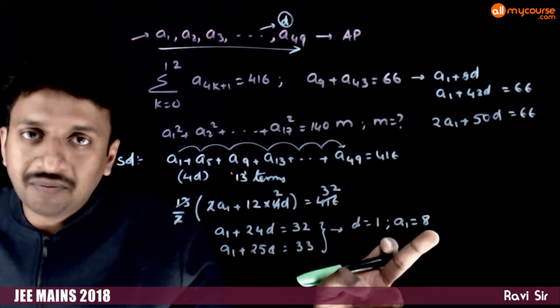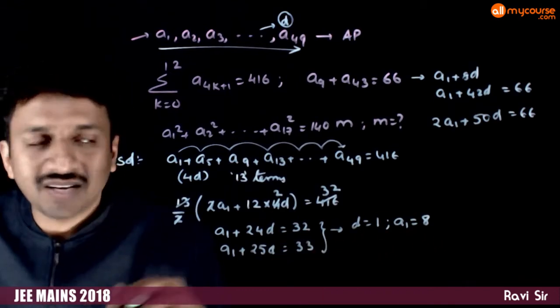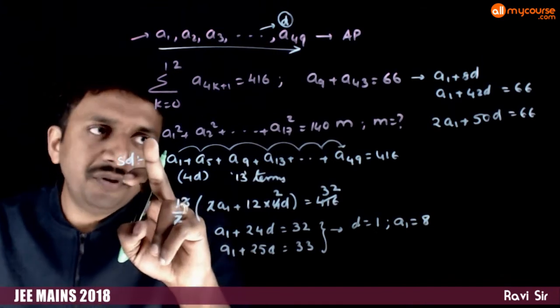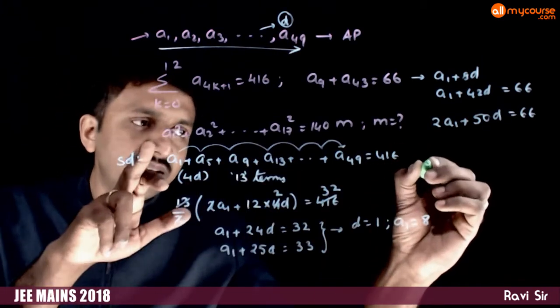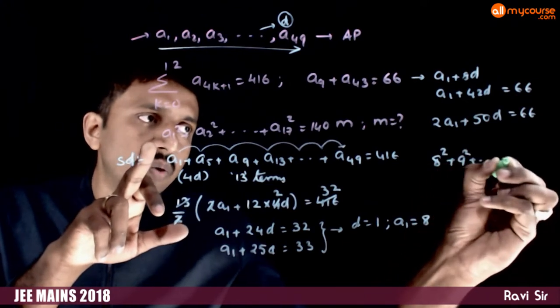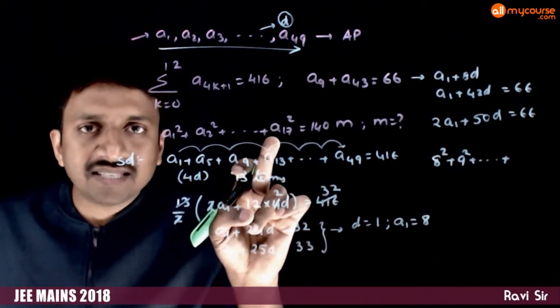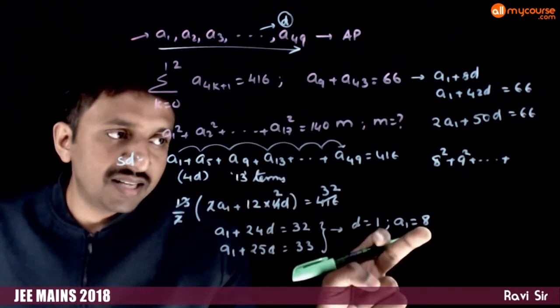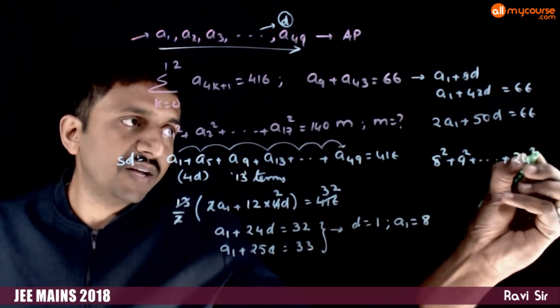a1 is 8 and the common difference is 1. That means a2 is 9, 10, and so on. What is asked of you? We are asked to find 8 square plus 9 square plus so on up to a17 is a1 plus 16d. That is 8 plus 16 up to 24 square.